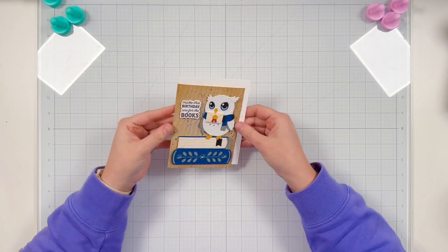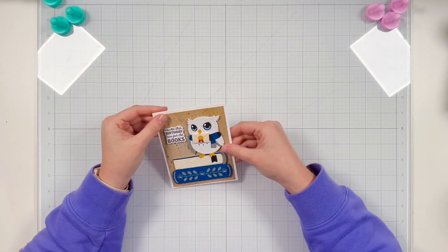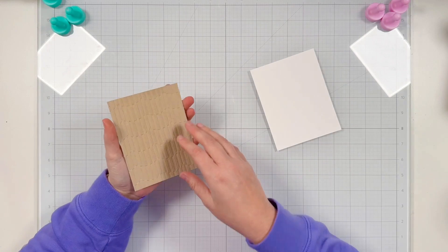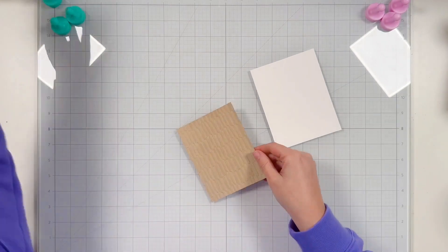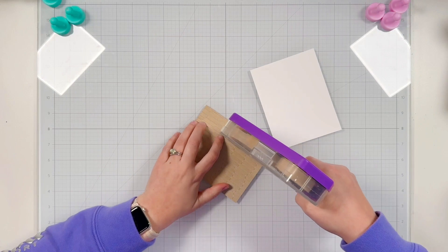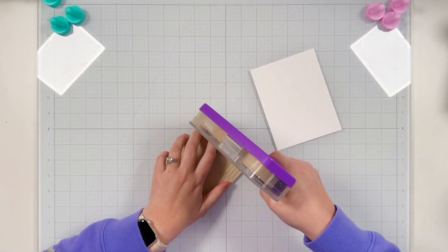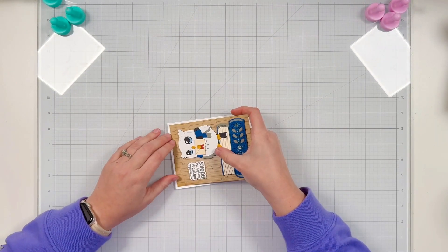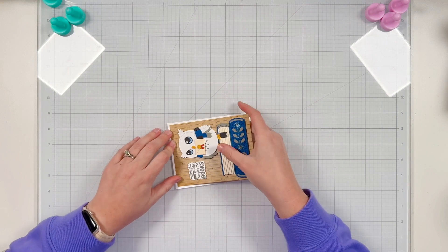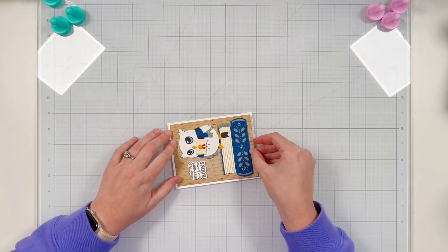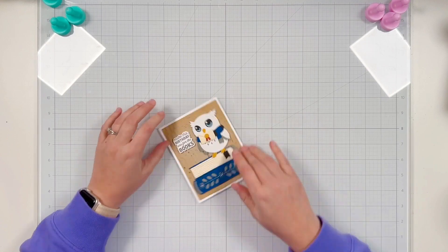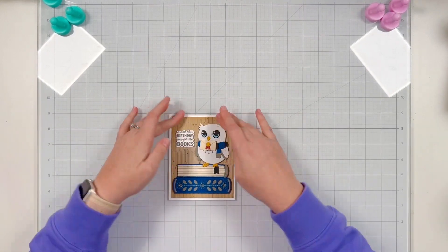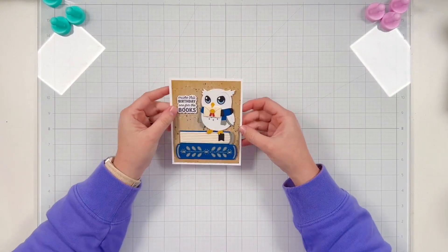My panel is just slightly smaller than an A2. It's four by five and a quarter. So I can have a white border around my panel onto my card base. I'm going to grab my scotch runner to get all of that adhesive on the back of my panel and then attach it to my top folding A2 card base in white cardstock. And that will finish off my card.